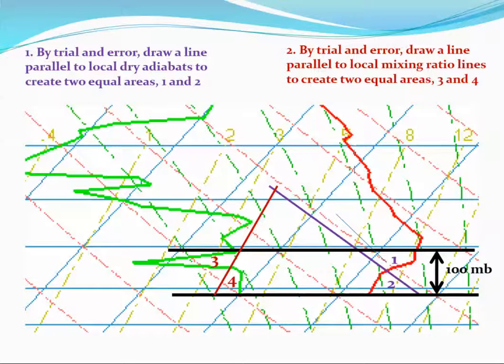Finally, if we connect the dry adiabat we chose and the mixing ratio line that we chose, we have our mixed layer LCL. When we zoomed in on the lower part of the sounding, we cut off the labels for the pressure levels. But this is roughly 680 millibars.